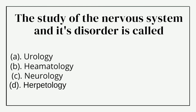The study of the nervous system and its disorders is called — option A: neurology, option B: rheumatology, option C: neurology, option D: herpetology. The correct answer is option C: neurology.